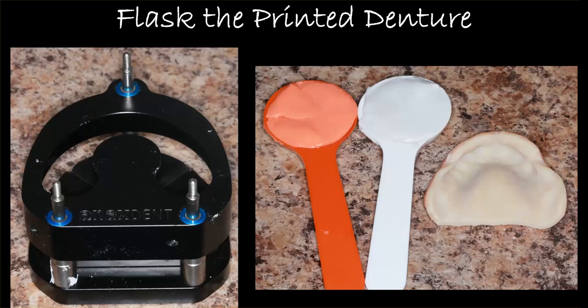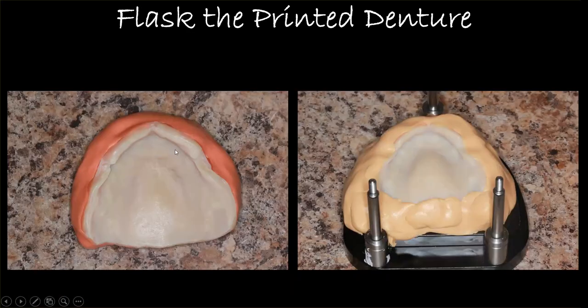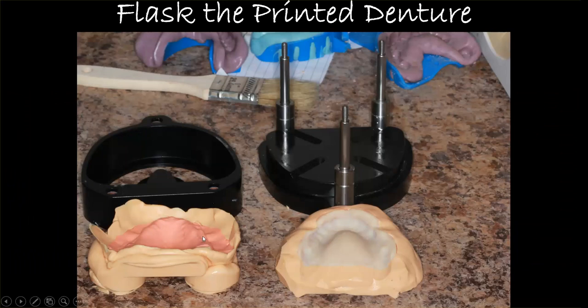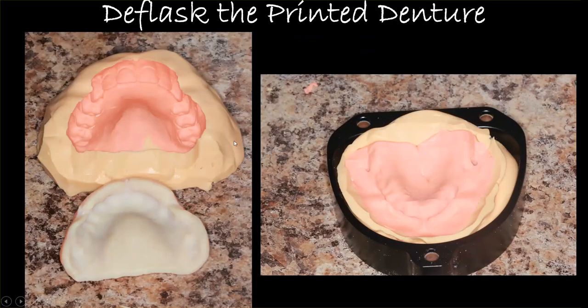Assuming it's good, you go about processing the denture. A key goal is to do this completely in-house. One option is an Ivocap flask — you buy the little flask, and the denture gets invested in a PVS putty material that's extremely hard and accurate. Once you've done the outer surface, you paint it so it doesn't stick, do the intaglio, and when you break the flask open, you pop the 3D printed denture out.